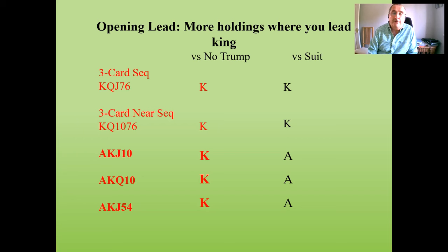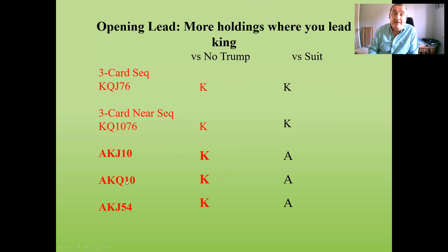If your partner only knows the first part — the first two lines of the table — they'll assume you don't have the ace when you lead the king. But it is standard play to also lead the king against no trump in these extended holdings. Prior to this lesson, from ace-king-queen-ten you might have led the ace, but you should not do that now — as long as your partner understands — because leading the king from this holding is specifically to find out who's got the jack.